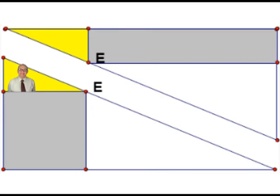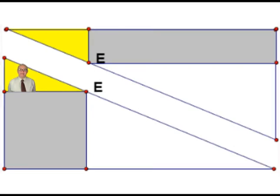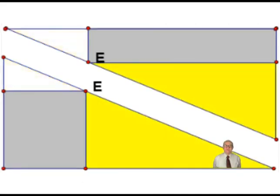This is because each is half of a small rectangle separated by a diagonal. Also, the two medium-sized right triangles are congruent to each other for the same reason.